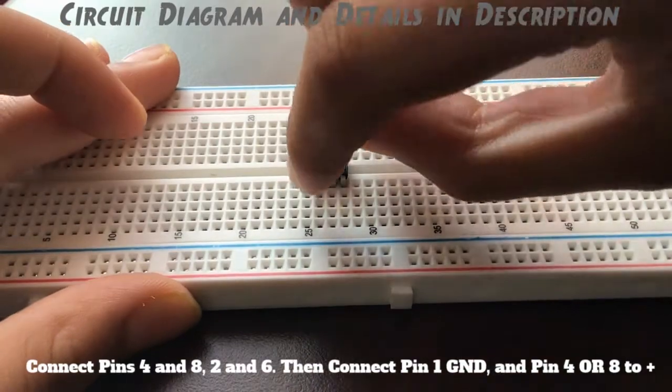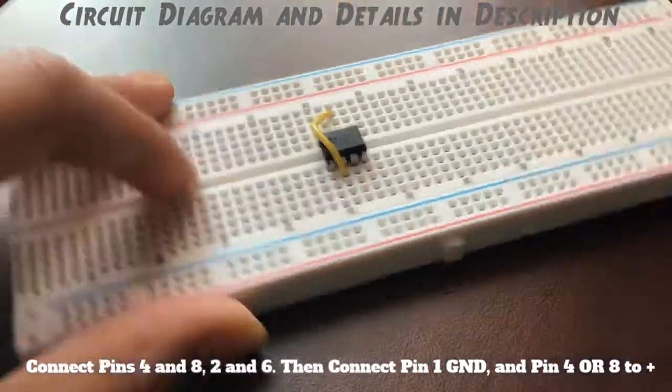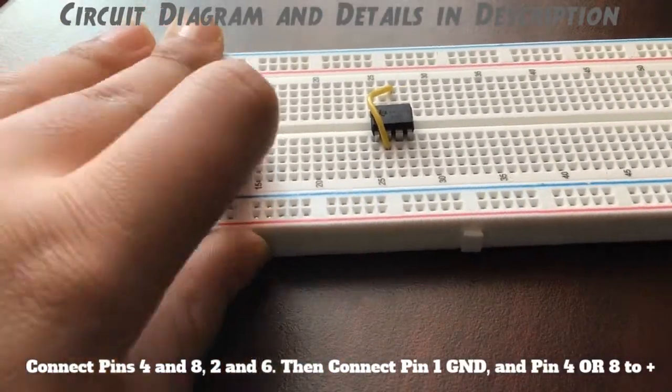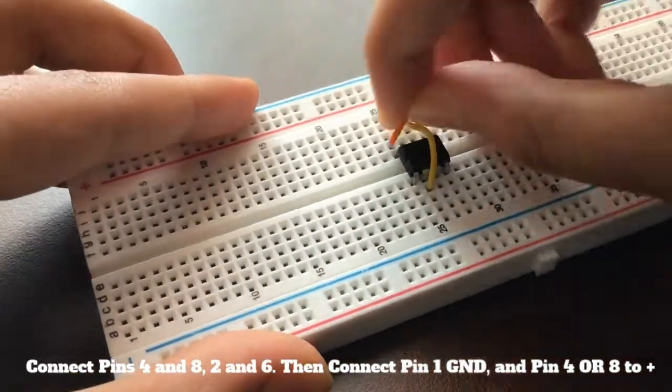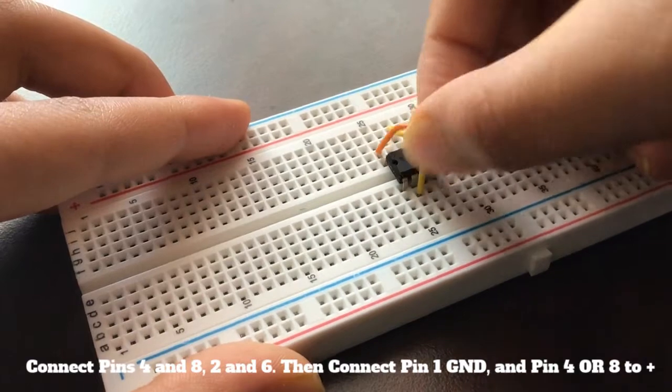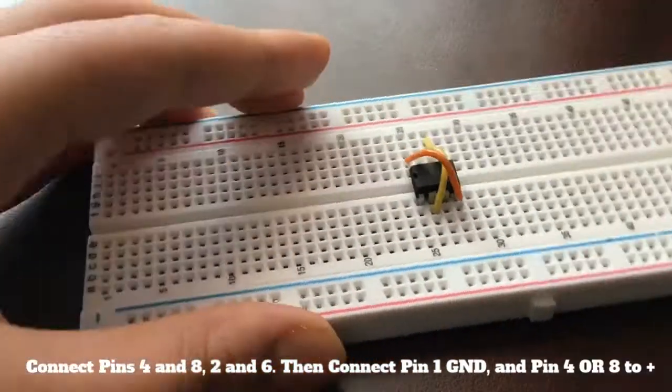Place a 555 timer IC on the board and connect pin two to pin six, pin four to pin eight, pin one to the negative rail, and pin eight to the positive rail. We are doing this to generate a square wave.